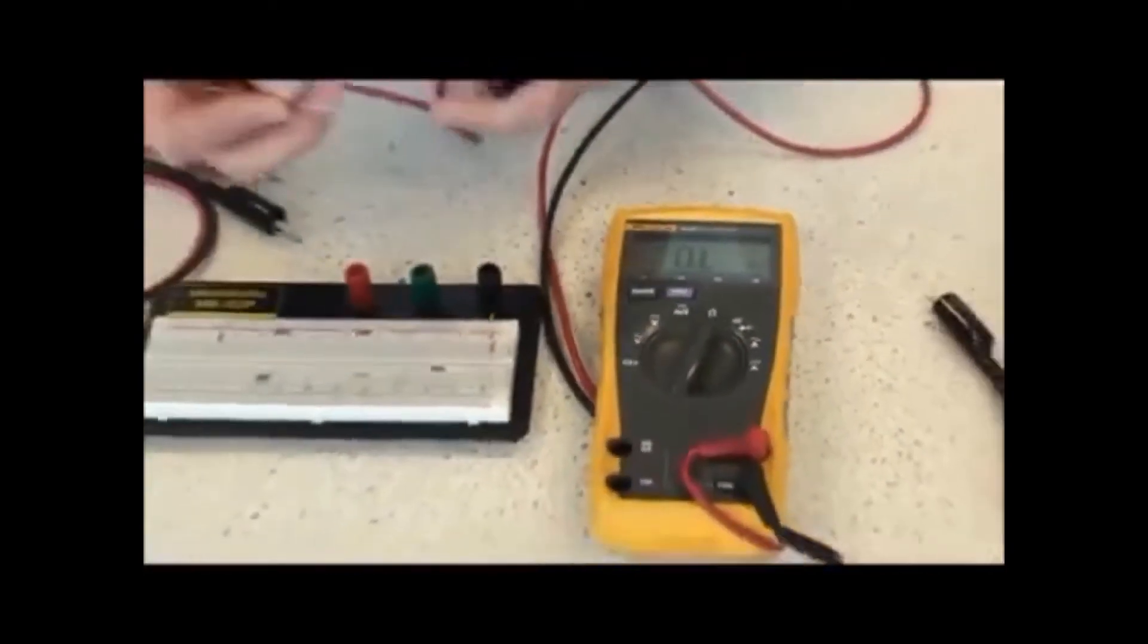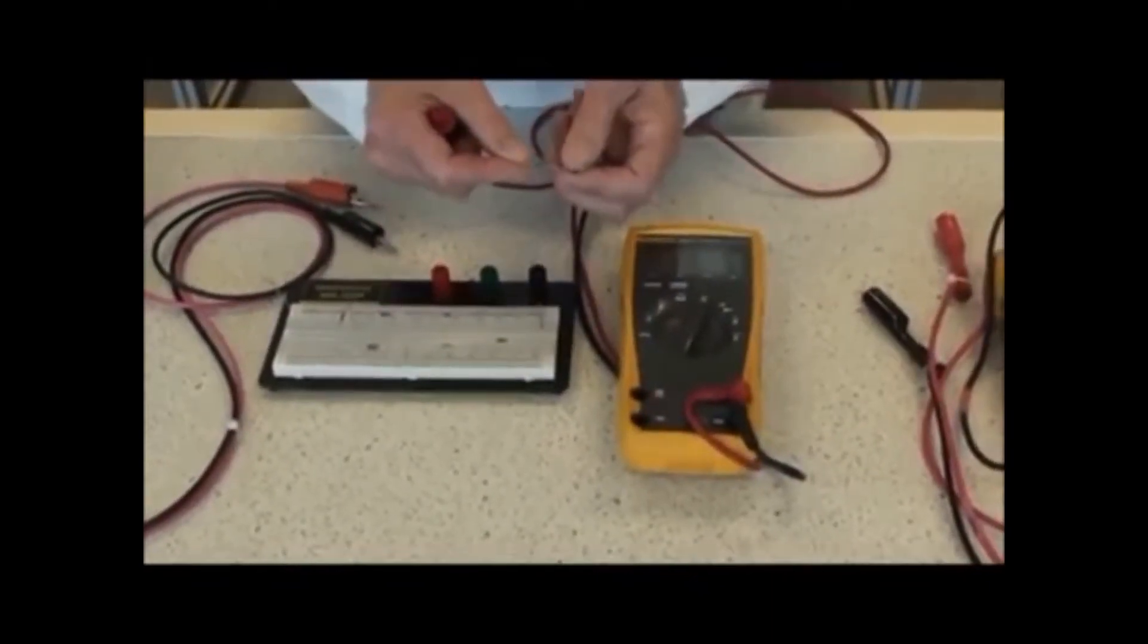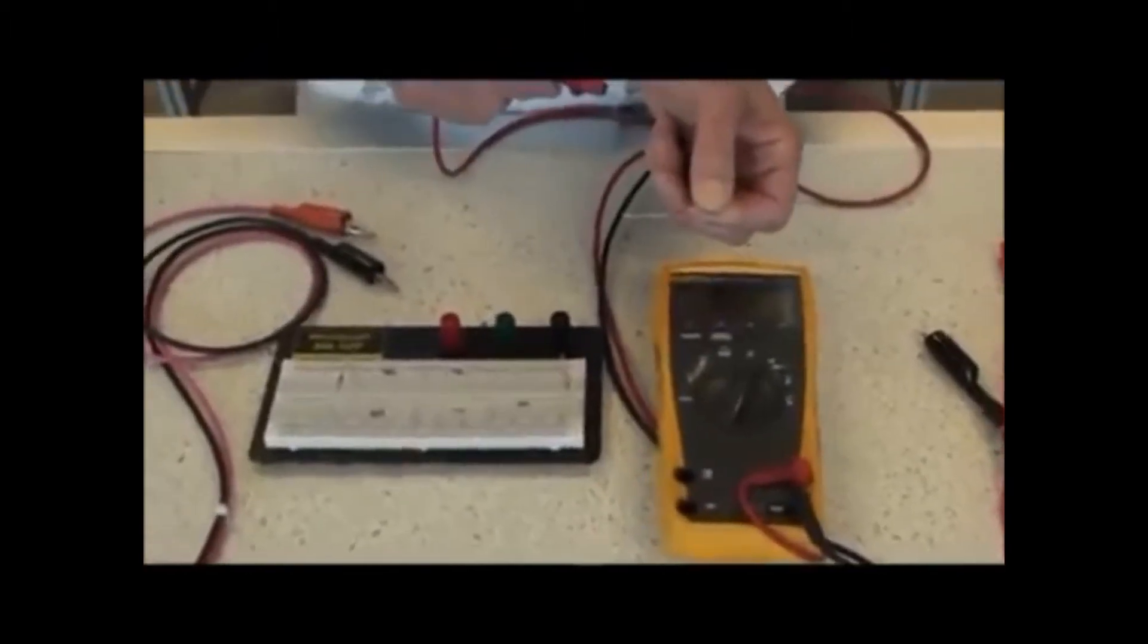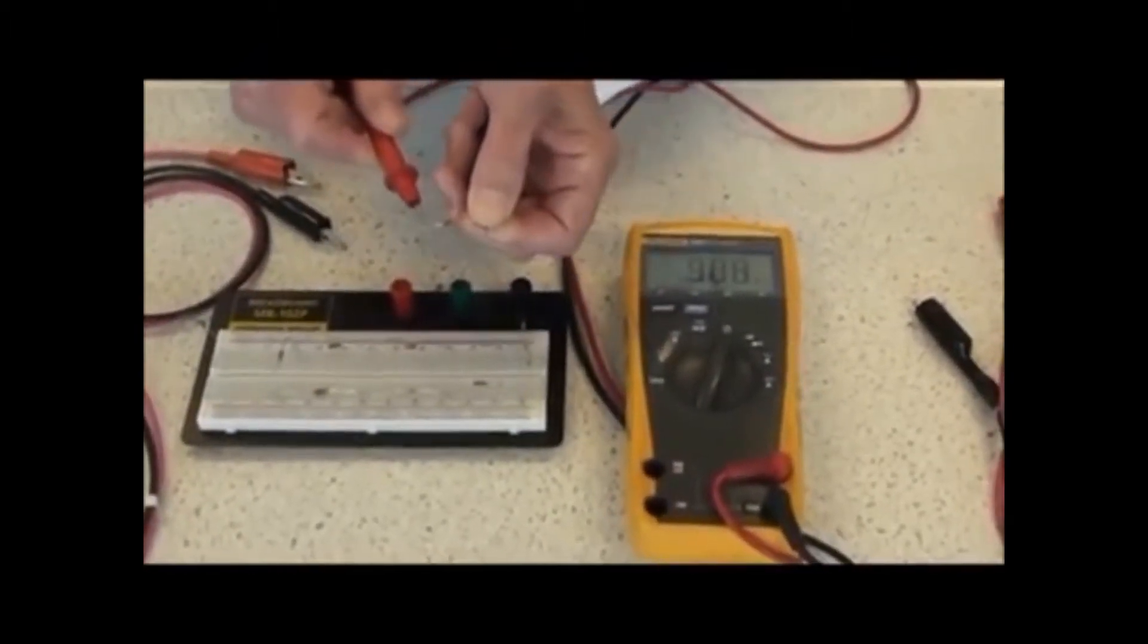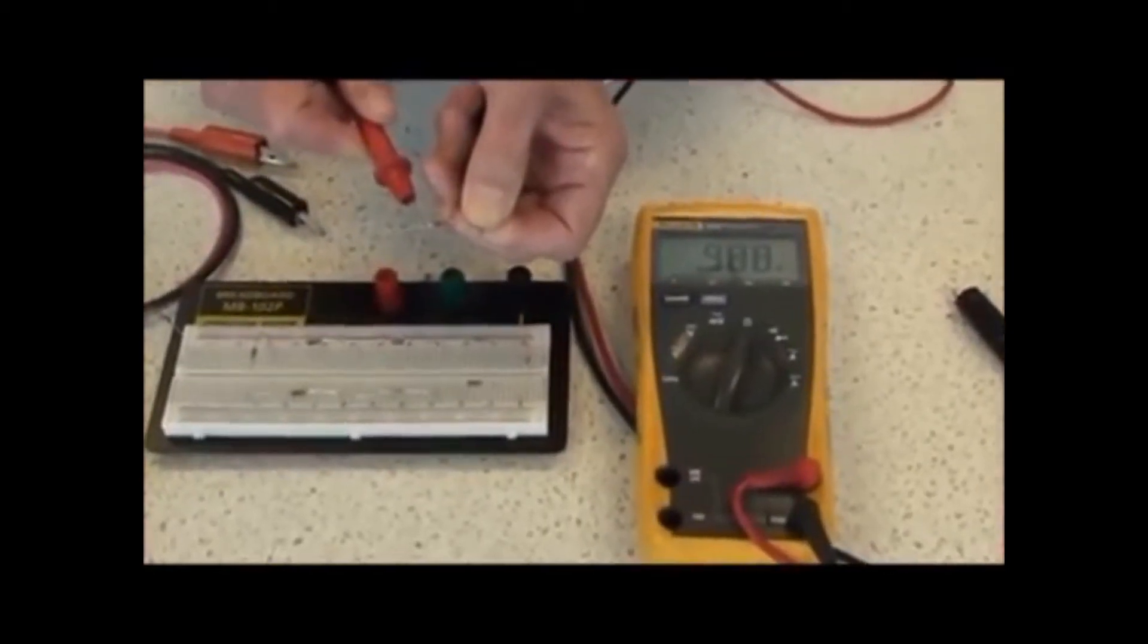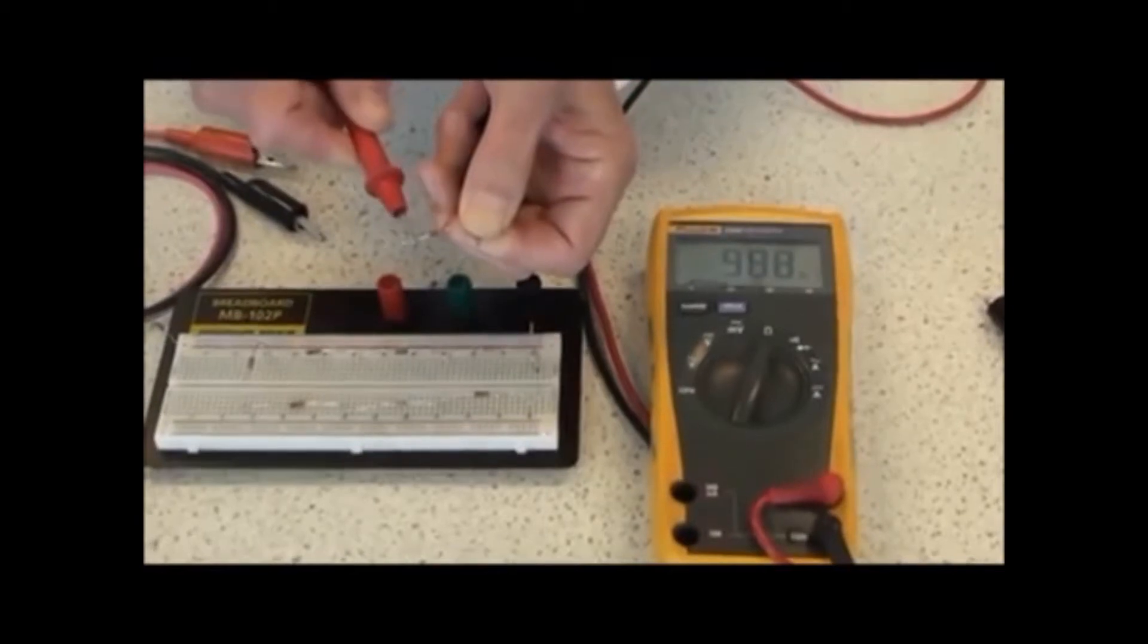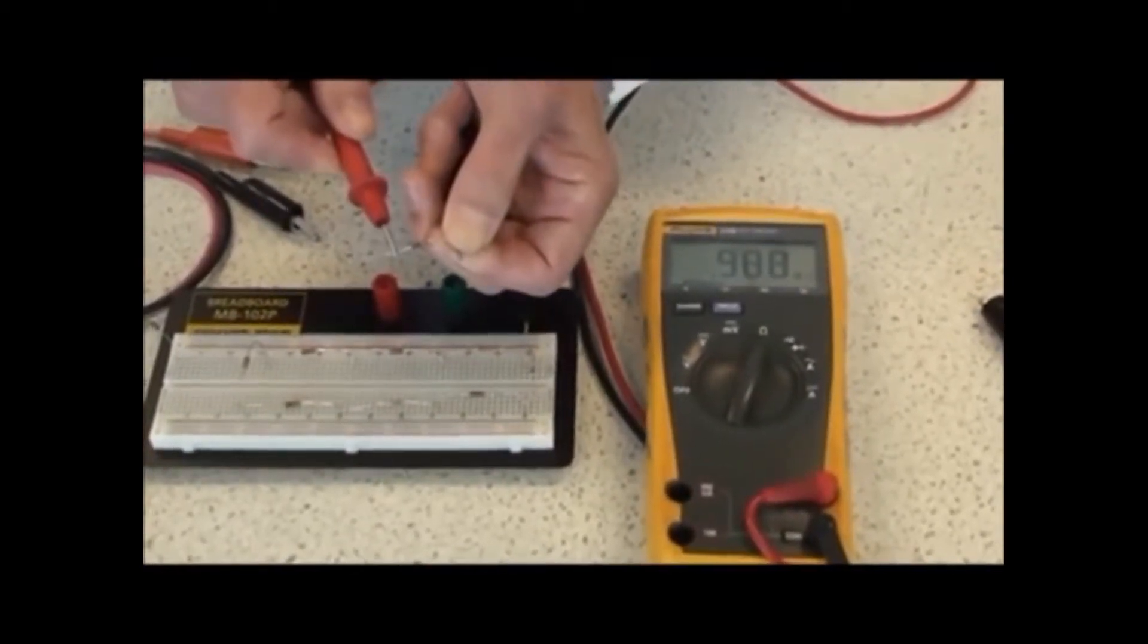For a loose resistor, the resistance measurement is taken quite easily by putting the black lead on one side of the component and the red lead on the other side to measure the resistance. In this case, 0.988 megaohms. The nominal value of this particular resistor is one megaohm.